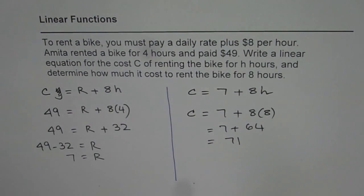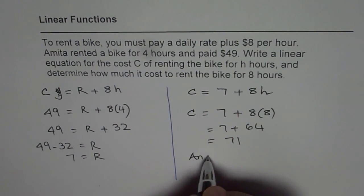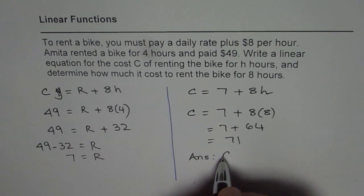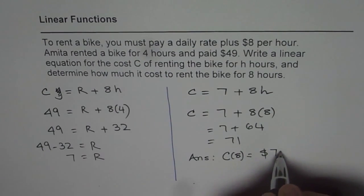So 7 plus 64 is 71, so we get $71. So the answer is cost for 8 hours equals to $71, right?